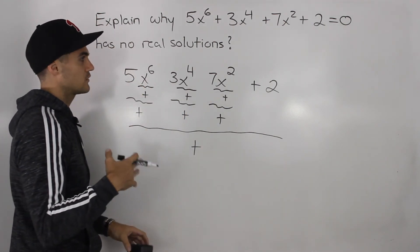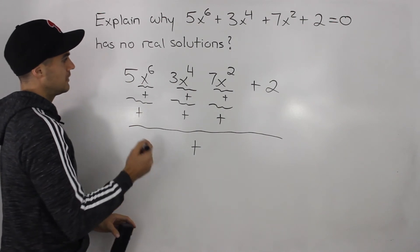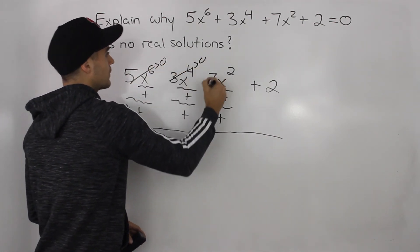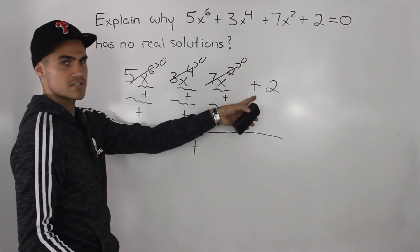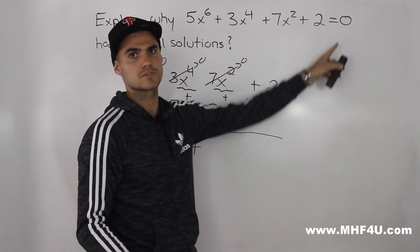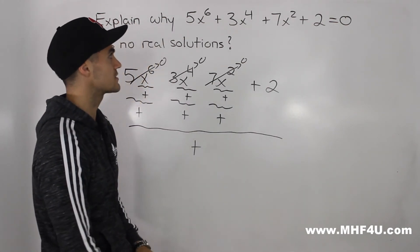Now what if we plug in an x value of zero? If we plug in x equals zero, this will go to zero, this will go to zero, and this will go to zero. We'll just be left with this constant two. Notice two can't equal zero, so x equals zero is not a solution either.